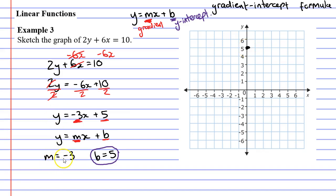We also know that our gradient is negative 3. What that means is that every time I step 1 to the right, I'm actually going to go 1, 2, 3 squares down. It's going down because it's a negative. If it was a positive, it would be going up 3 steps.